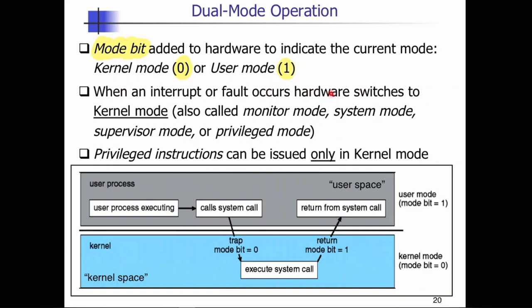When an interrupt or fault occurs, that is when the hardware switches to kernel mode. Kernel mode is also called by several different names: monitor mode, system mode, supervisor mode, or privileged mode. The key benefit of that distinction is that privileged instructions can only be issued in kernel mode. That is your dual mode operation — how we distinguish between user code and operating system code.